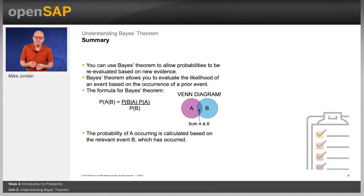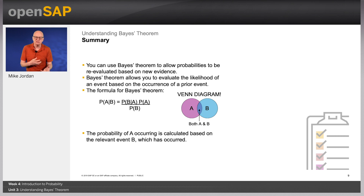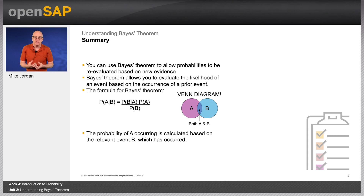In summary, we've learnt the following. You can use Bayes' Theorem to allow probabilities to be re-evaluated based on new evidence. Bayes' Theorem allows you to evaluate the likelihood of an event based on the occurrence of a prior event. The formula for Bayes' Theorem is: to calculate the probability of event A given the occurrence of a previous event B, take the probability of event B given A, multiply that by the simple probability of A, and divide the whole result by the simple probability of B. The probability of A occurring is calculated based on the relevant event B which has occurred.